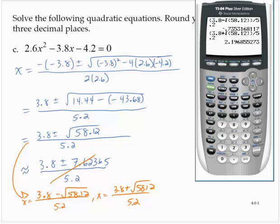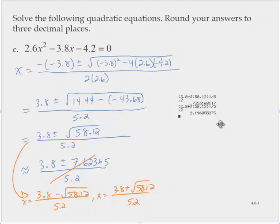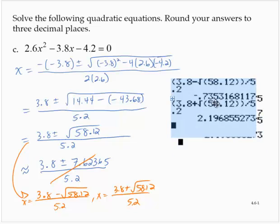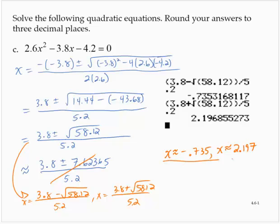And we get the other solution. Let me drag that over onto our screen and enlarge it so we can read it. So there are our two solutions, and now we approximate them appropriately: x is approximately negative 0.735, and x is approximately 2.197.